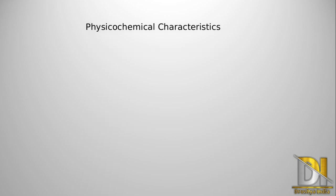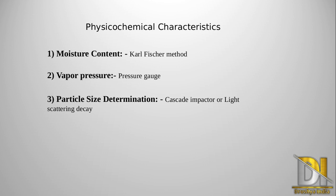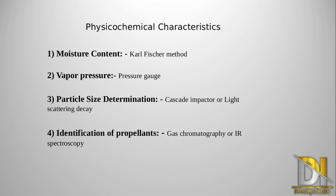Now we will discuss the physical and chemical properties of aerosols. The first is moisture content — as discussed earlier, stability of aerosol can be increased by controlling moisture content, and Karl Fischer's method is used to determine it. Next is vapor pressure, which is measured with the help of a pressure gauge and plays an important role in aerosol. Then particle size determination is done using a cascade impactor or light scattering device, as penetration of the drug into the respiratory tract depends on particle size. Last is identification of propellants, which can be determined by gas chromatography or IR spectroscopy.